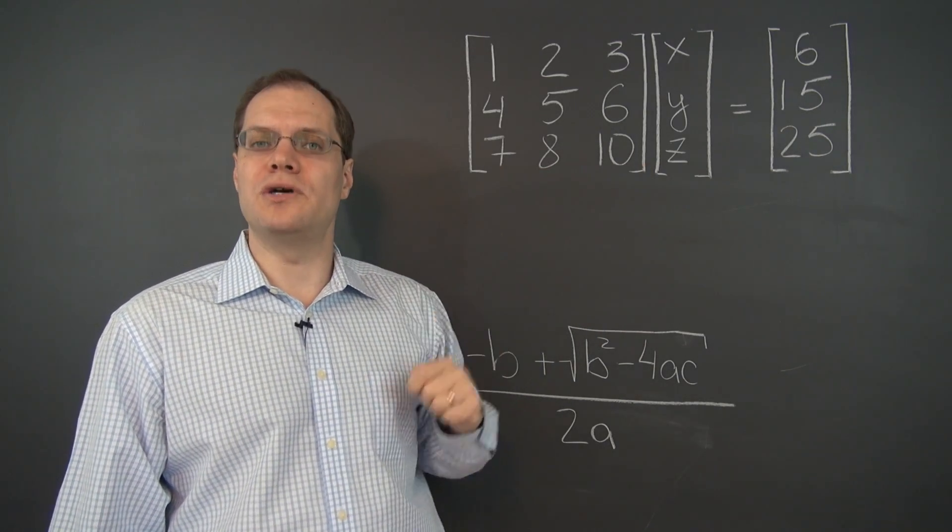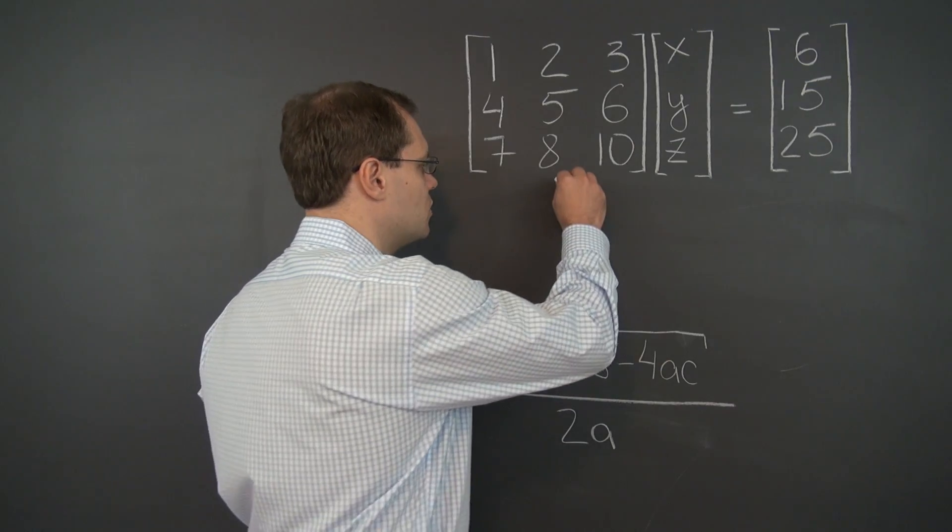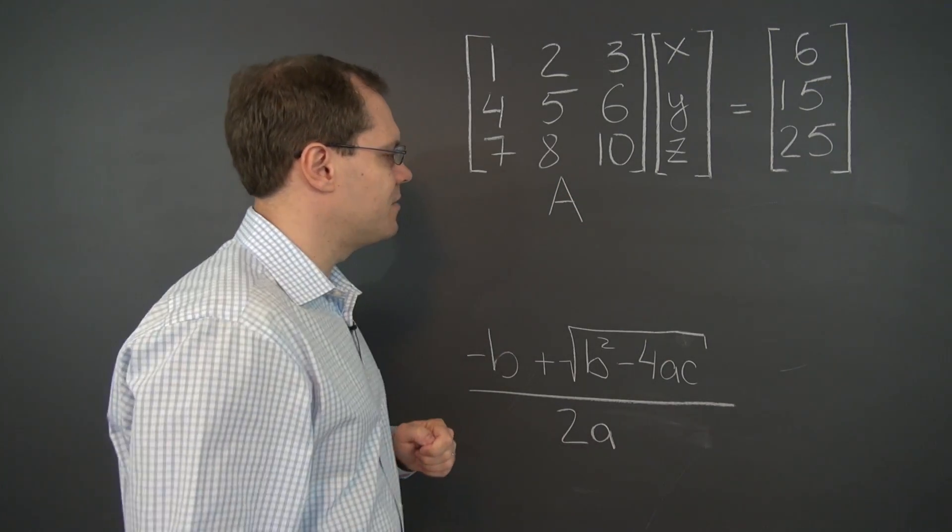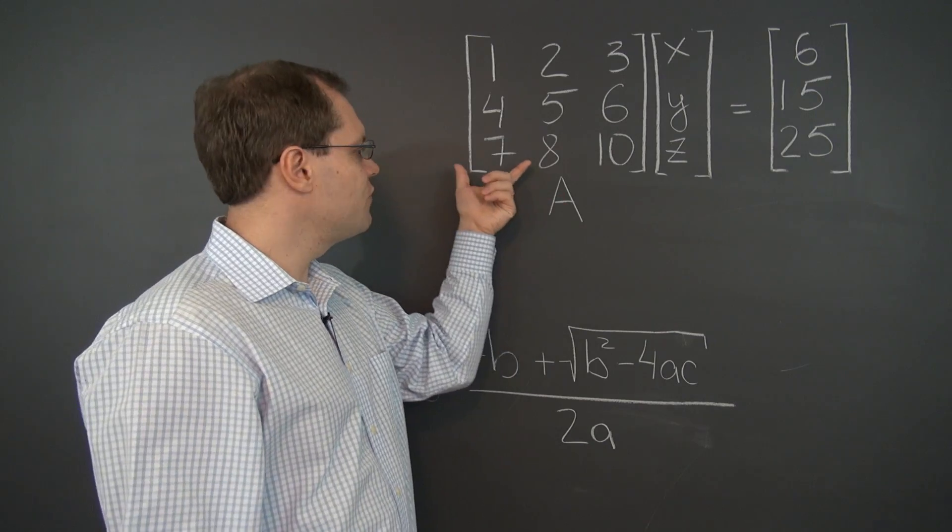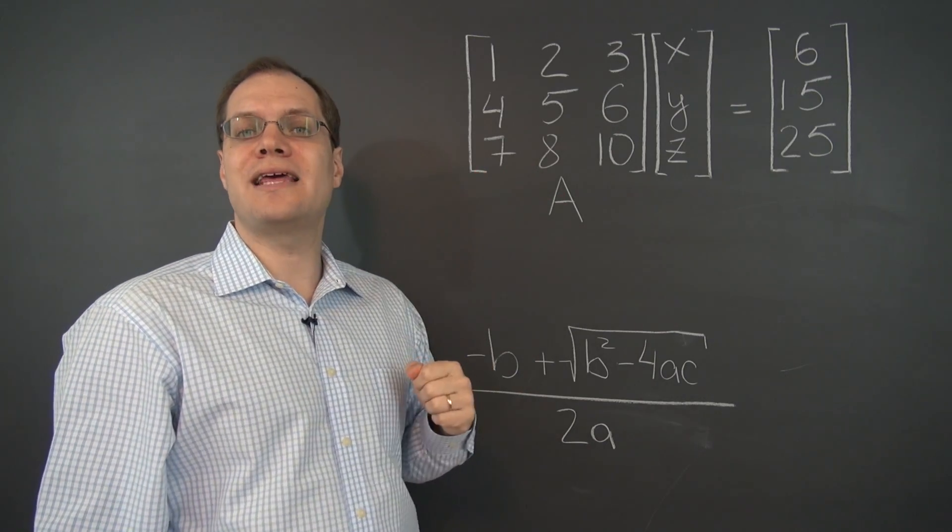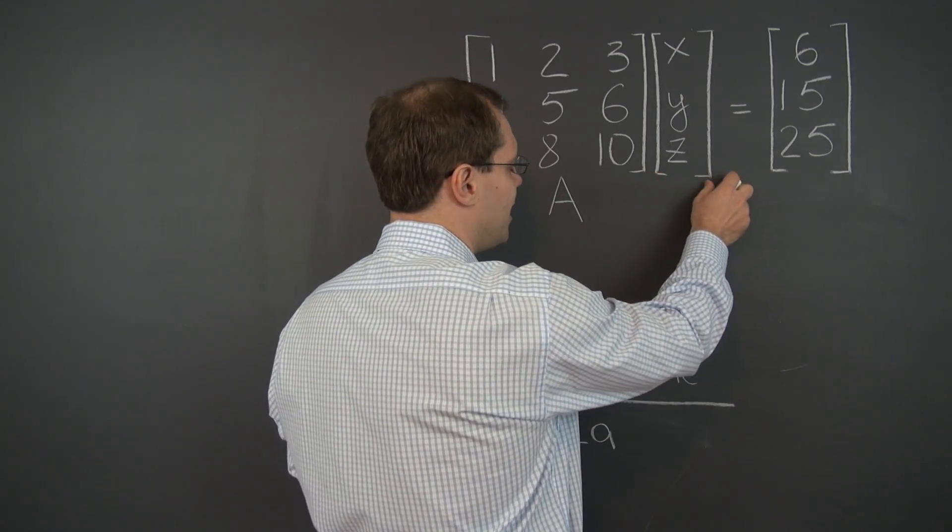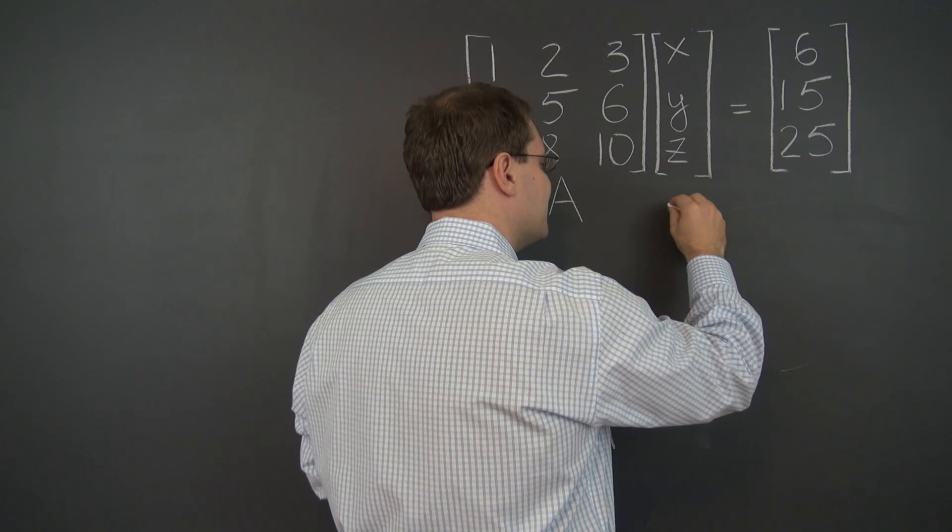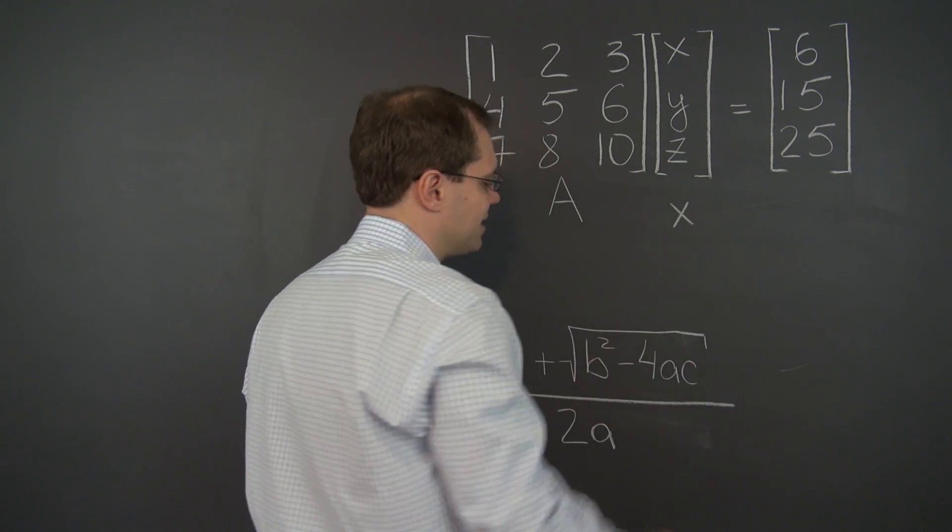Well in a moment we will. In a moment we'll call this the matrix A. It's a capital letter. All fat matrices will get capital letters. And this column, a column vector, a column matrix would be called X.